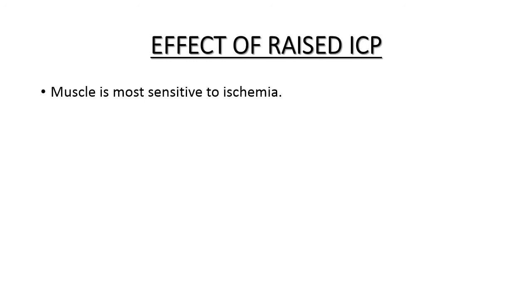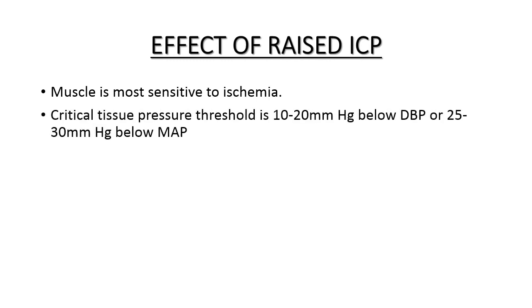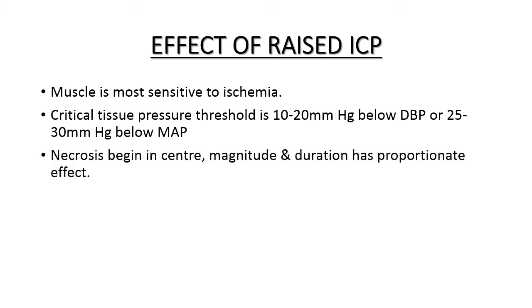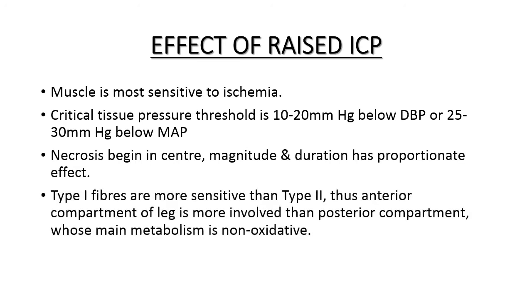Of muscle, bone, and nerve, muscle is most sensitive to ischemia. The critical tissue pressure threshold is about 20 mmHg below diastolic pressure or 25 to 30 mmHg below mean arterial pressure. Necrosis begins in the center, and its extent is proportional to the magnitude and duration of raised pressure. Type 1 fibers are more commonly affected than Type 2 fibers. Type 1 fibers are found in the anterior and lateral compartments of the leg, while the deep posterior compartment has Type 2 fibers, such as gastrocnemius, with non-oxidative metabolism.